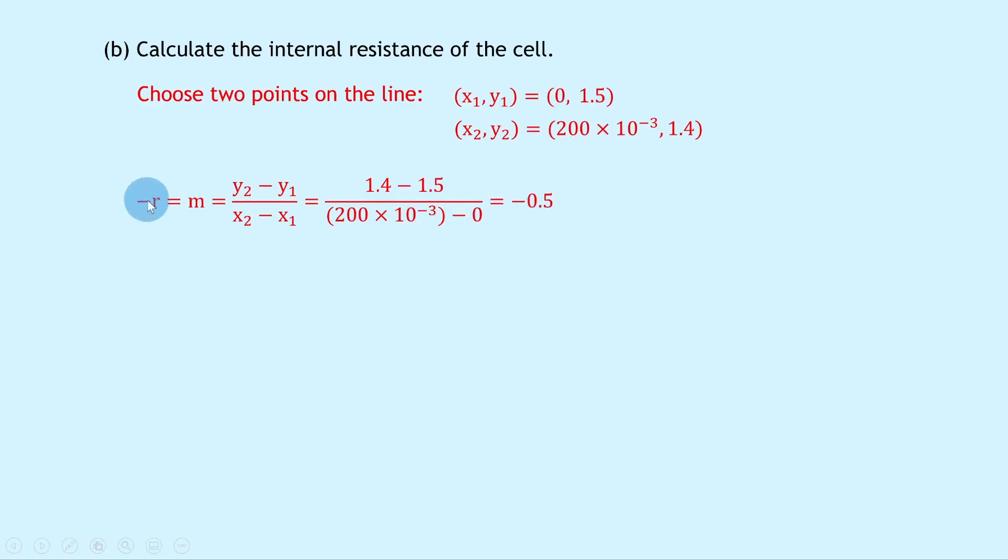However, we've now got negative r on this side and negative 0.5 on this side, so we can cancel out the negatives to get r is equal to 0.5 ohms.